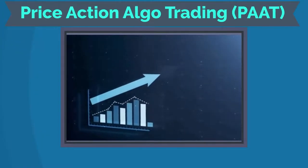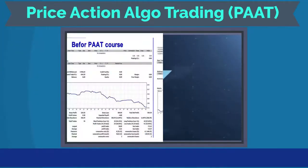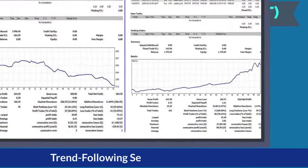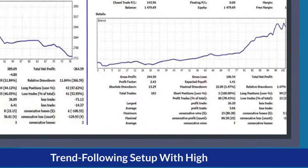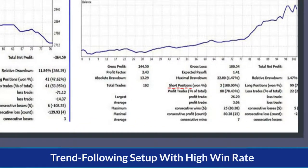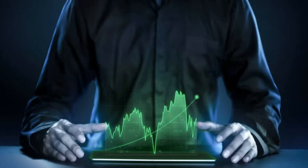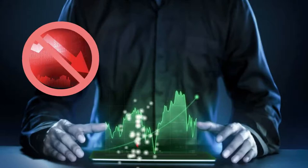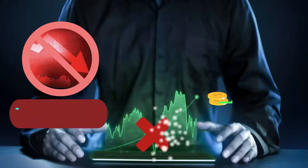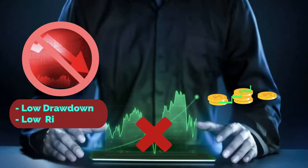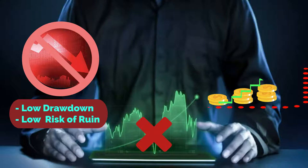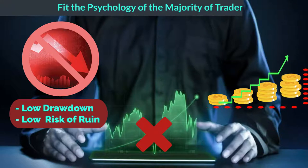We addressed this loss aversion issue in the Price Action Algo trading system by instructing traders to master our high probability trend following setup. The high win rate also assures a low drawdown and risk of ruin from the money management perspective, so it will fit the psychology of the majority of traders and prevent account liquidation.